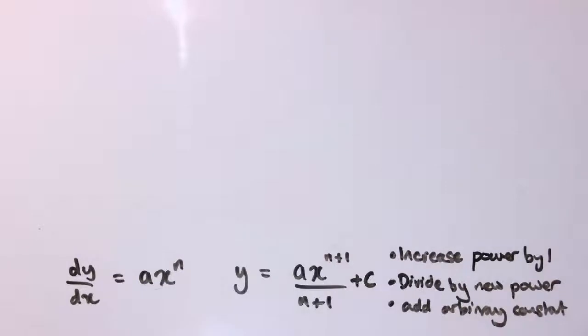In the previous video introducing anti-differentiation or integration, we saw that if dy/dx equals ax to the n, then to go back to the original function we would increase the power by 1, divide by the new power, and add an arbitrary constant. We also had this other notation for expressing exactly the same thing.